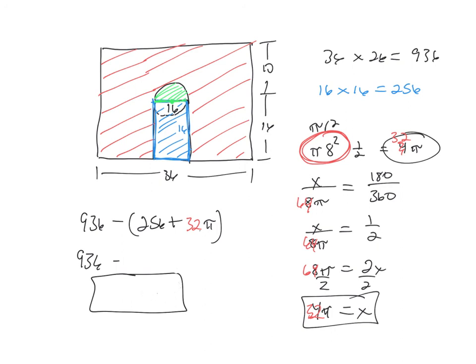It's still going to be feet squared, but 256 plus 32 pi. 356.53, so 936 minus 356.53, and we get 579.47 feet squared.